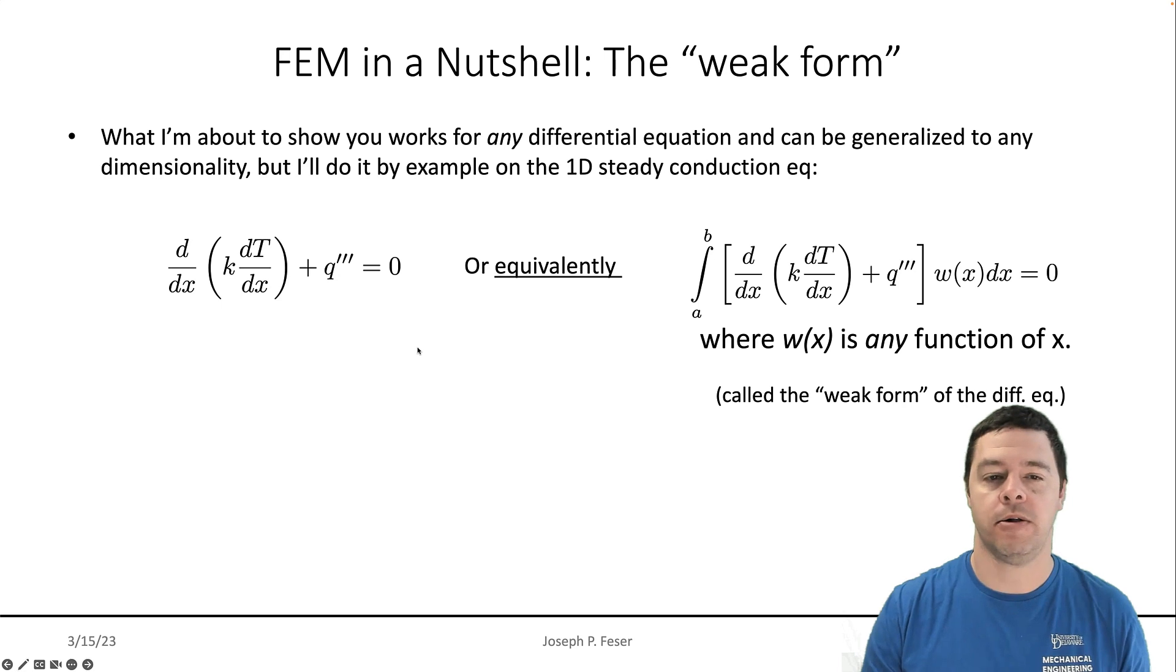Why? Well, imagine that I had some potential solution for T(x). Let's suppose that at some location within the domain, any location within the domain, so at any particular position x, if it turns out that this thing's not exactly equal to zero using that potential solution for T(x), then since this was supposed to hold for any function of x, I could choose a delta function. If I had chosen a delta function centered on that location where this thing wasn't equal to zero, then I wouldn't get zero when I integrate. So then I wouldn't obey the weak form, or I wouldn't obey this equation. And so if I can ever find a function w(x) where this is not equal to zero, then it's not a solution.